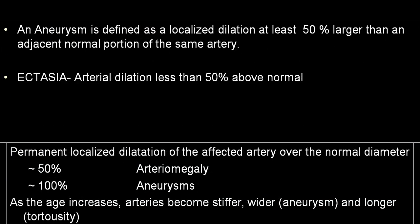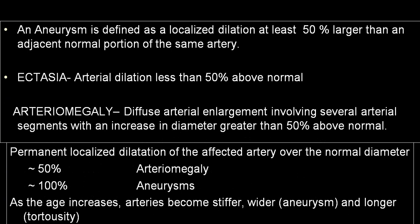There is another term called ectasia, where aortic or arterial dilatation is less than 50% above normal. There is also arteriomegaly, which is a diffuse enlargement involving several arterial segments with an increase in diameter greater than 50% above normal. If it reaches 100% dilatation, we call that aneurysmal dilatation.